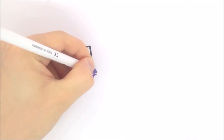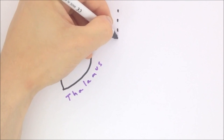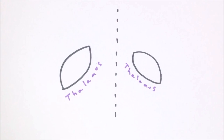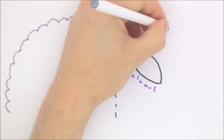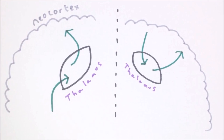The thalamus is a cluster of nuclei shaped like an American football. It is a bilateral structure with one in each hemisphere of the brain, and it acts as a relay station controlling the flow of information to the neocortex.